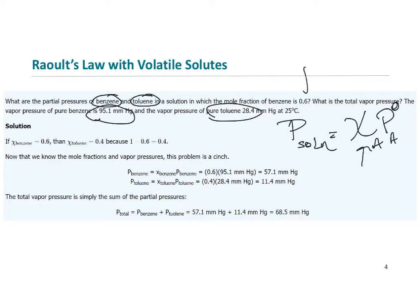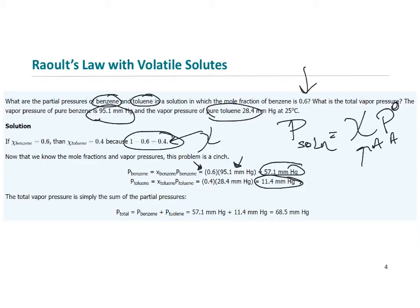They gave us the mole fraction of benzene. Since all mole fractions add up to one, and there are only two components, if one has a mole fraction of 0.6, the other must have a mole fraction of 0.4. Now we can find the partial contribution of the vapor pressure from each component by multiplying each mole fraction by the given pure vapor pressure of that component. Here are the partial pressures from each component, and then to get the total vapor pressure, we simply add them together. Pretty easy.